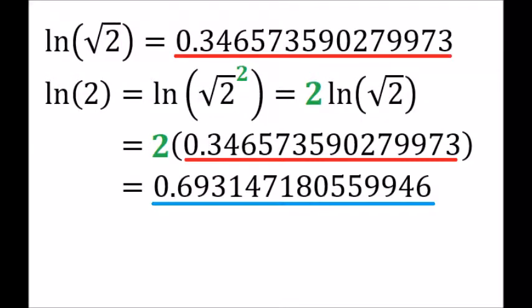Then we used laws of logarithms to find the natural log of 2, which is underlined in blue. Notice the first three digits are 0.693. That was the value we got from the limit definition.